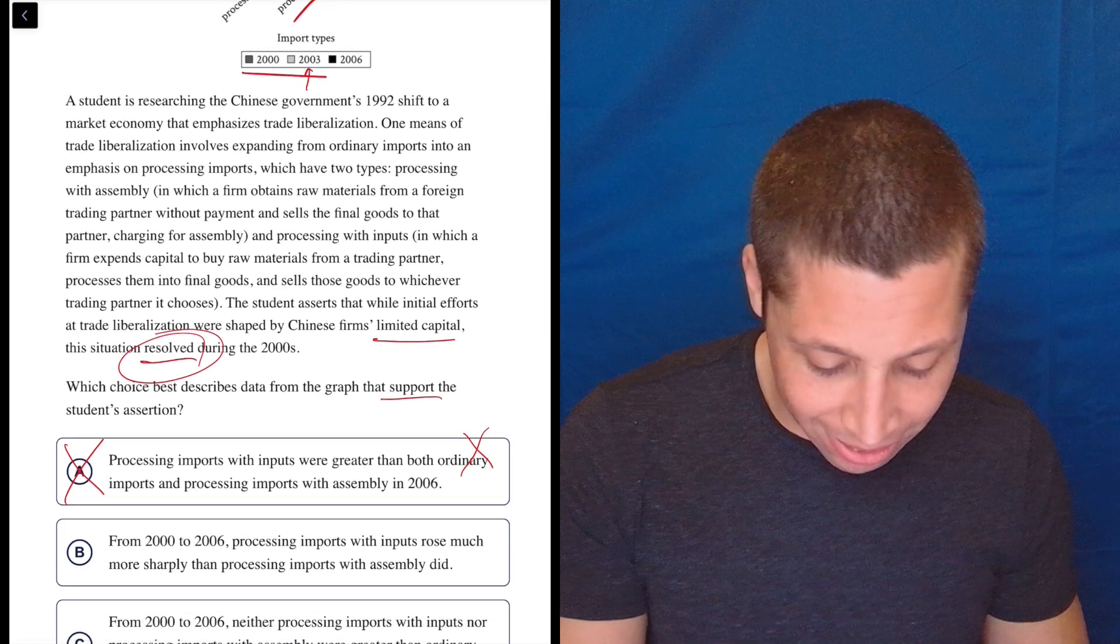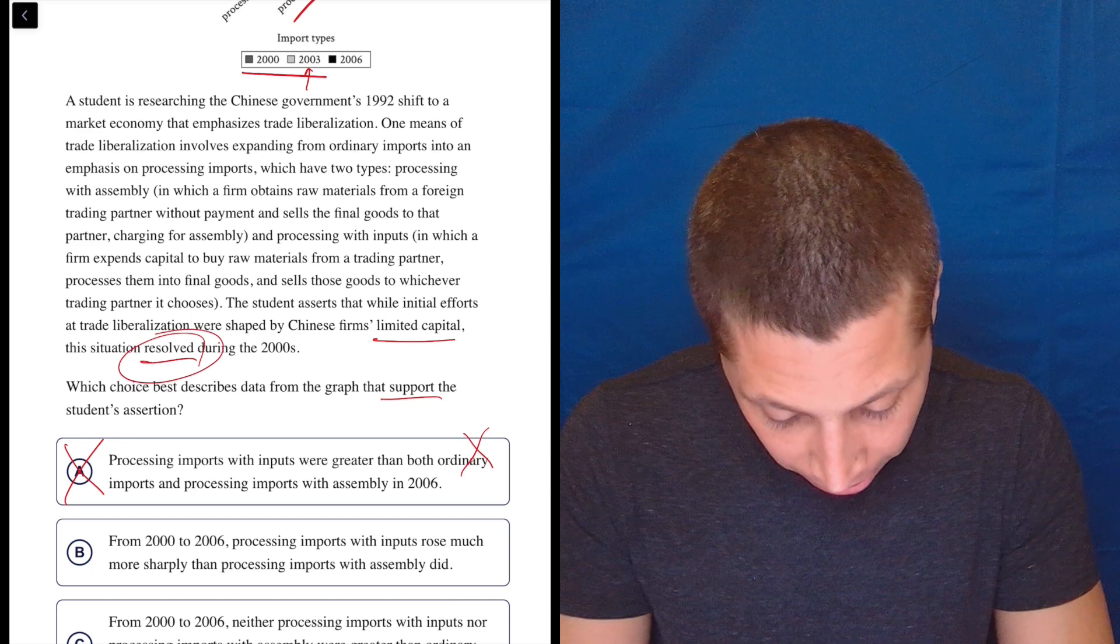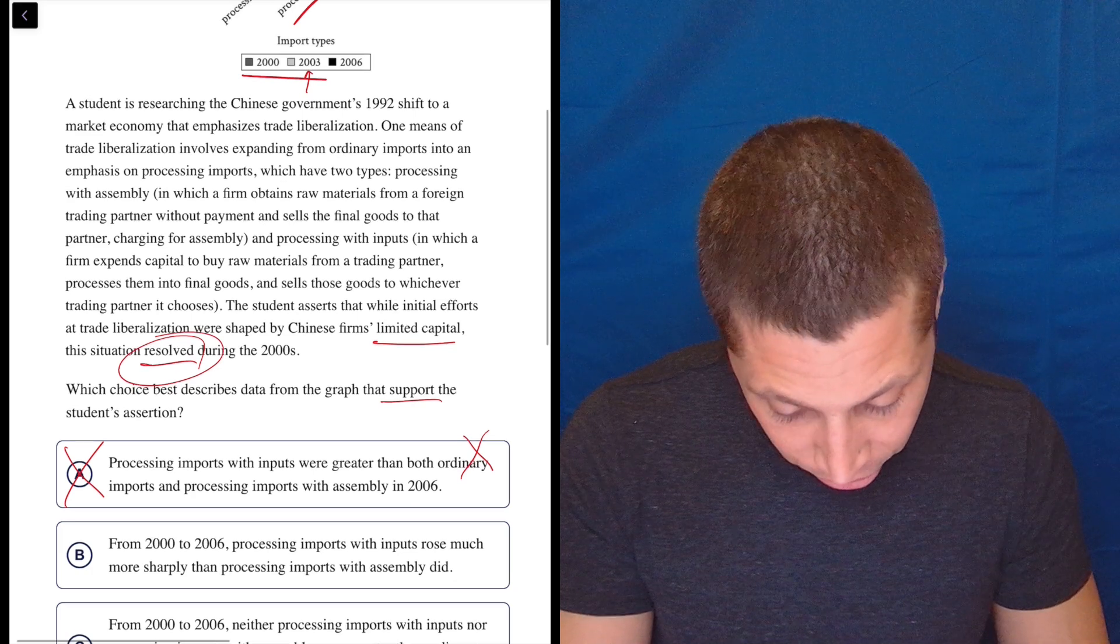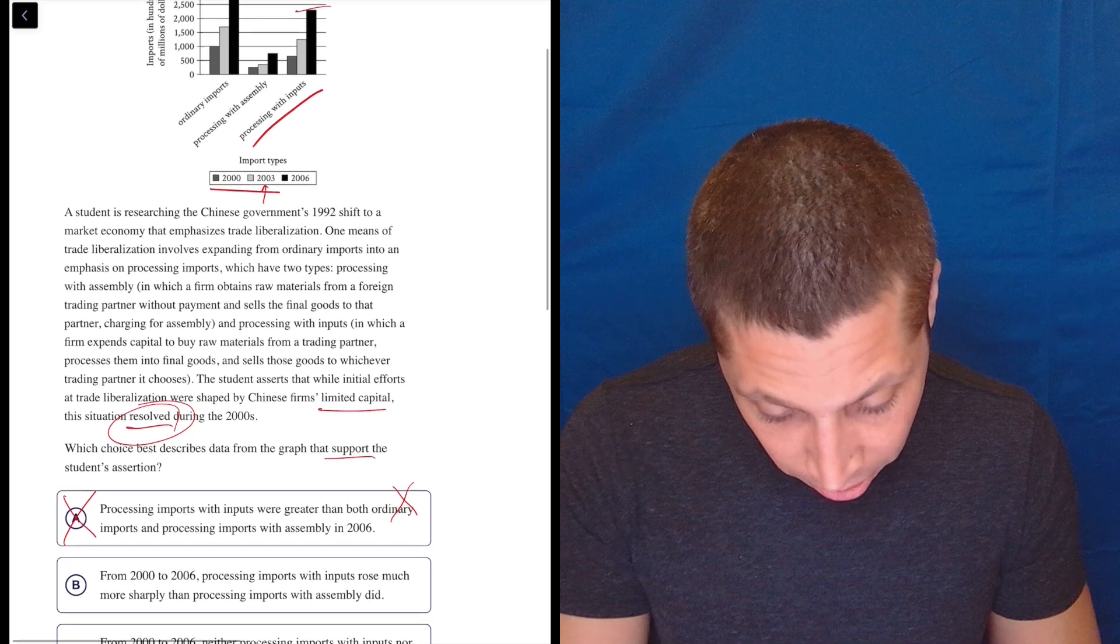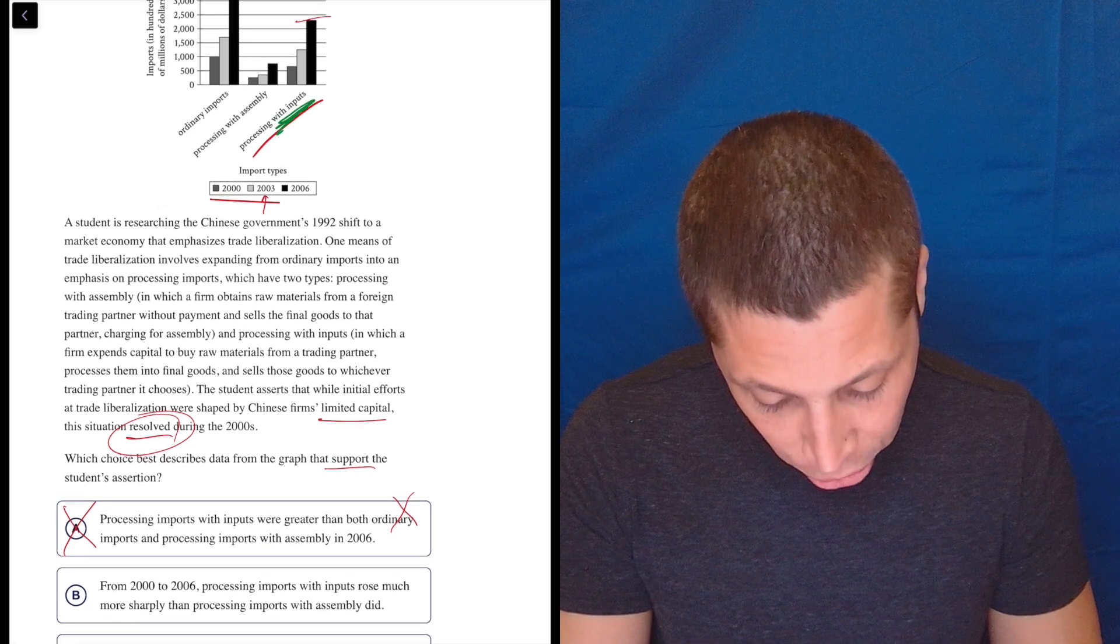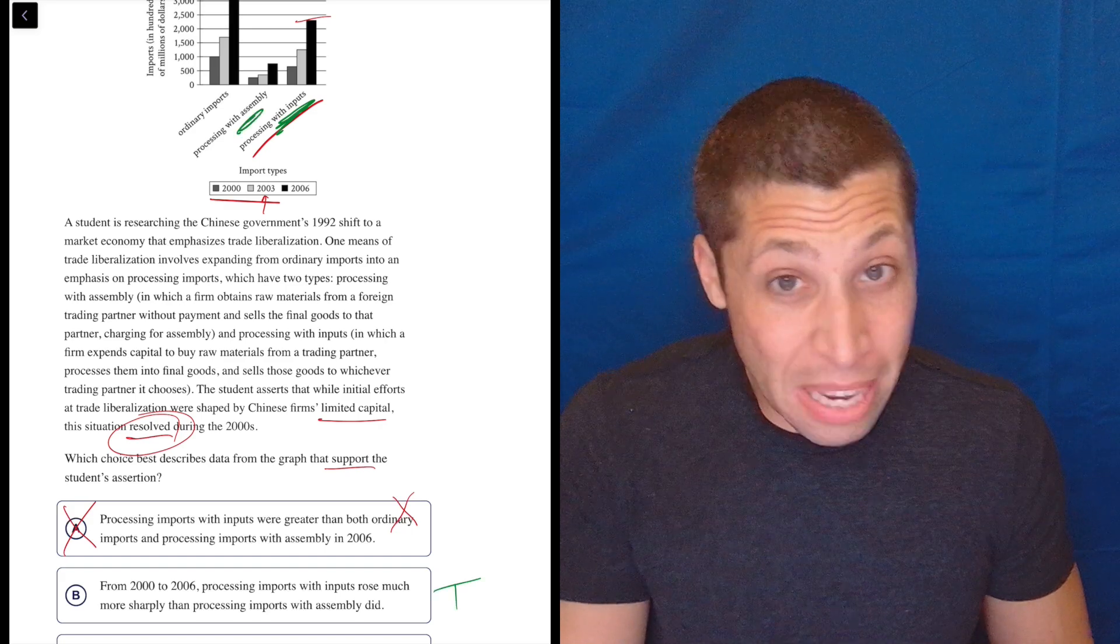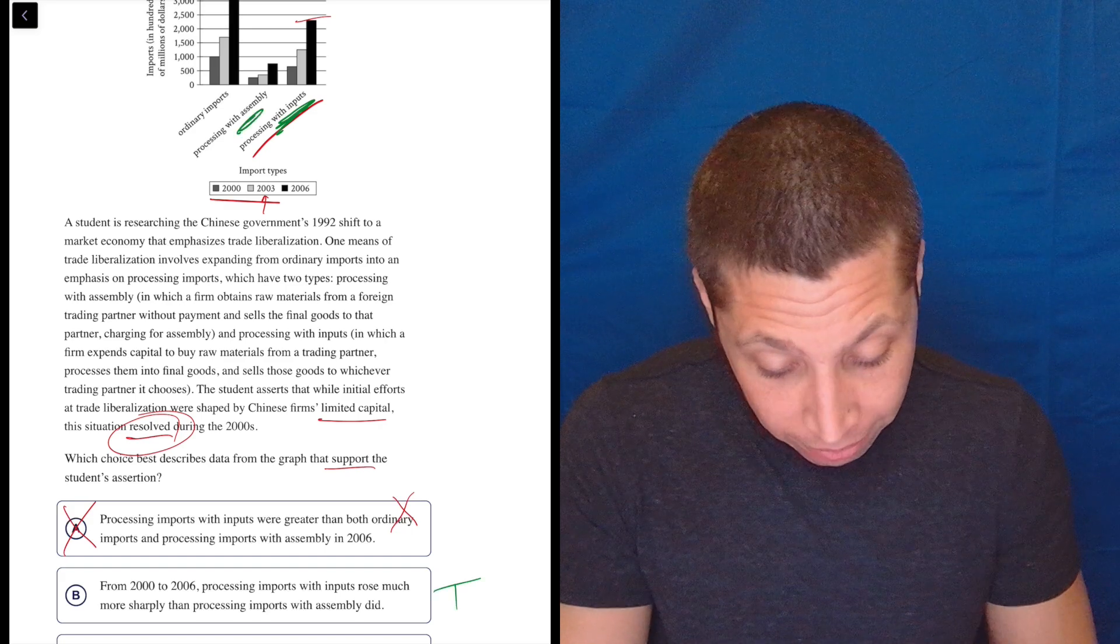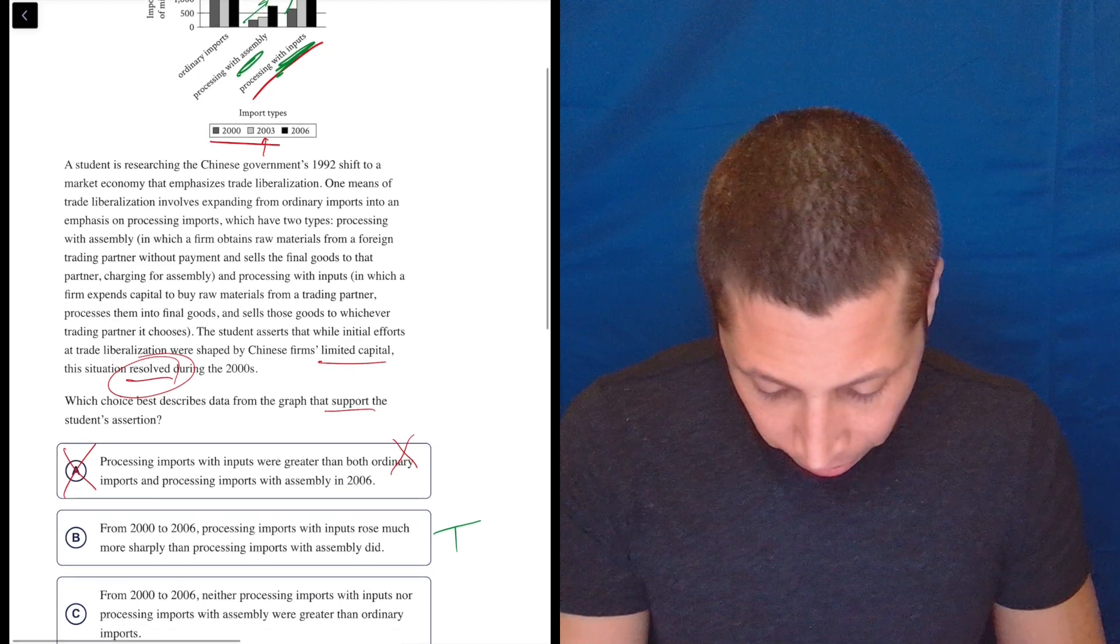B, from 2000 to 2006, processing imports with inputs rose much more sharply than processing imports with assembly. So let's just see, is that true? Processing with inputs is this guy, rose much more sharply than processing with assembly. I mean, that seems true. I don't know what it means, but that seems true. Okay, right? This is going up a little bit, this is going up a lot. Okay, let's look and see.